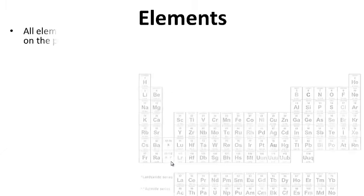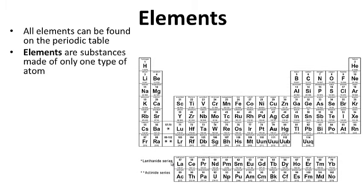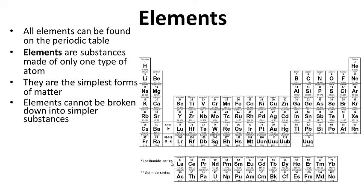Elements. All elements can be found on the periodic table. Elements are substances made up of only one type of atom. They are the simplest forms of matter.